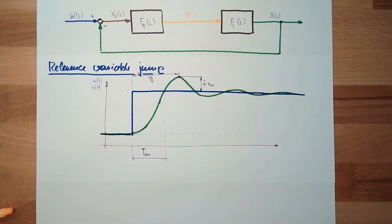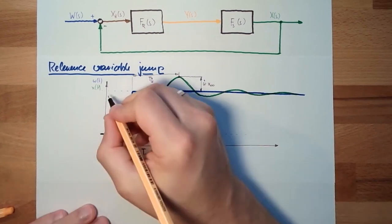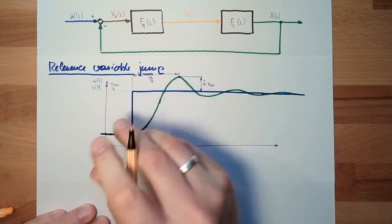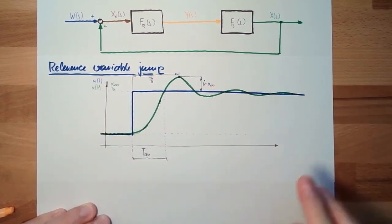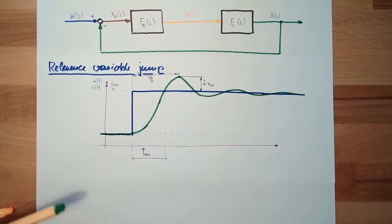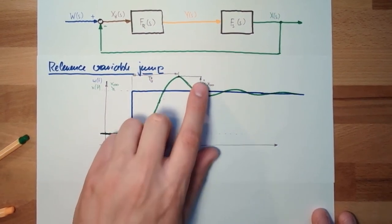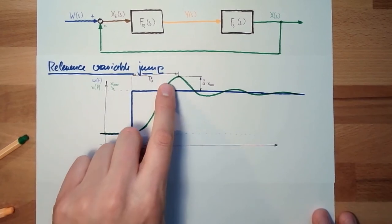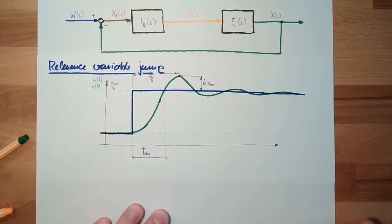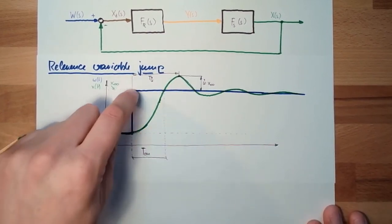Alright. X infinity, because here this is of course x infinity. In infinite time we will reach this value. So if the overswing width will be 10%, then we are overshooting 10% compared to this value.